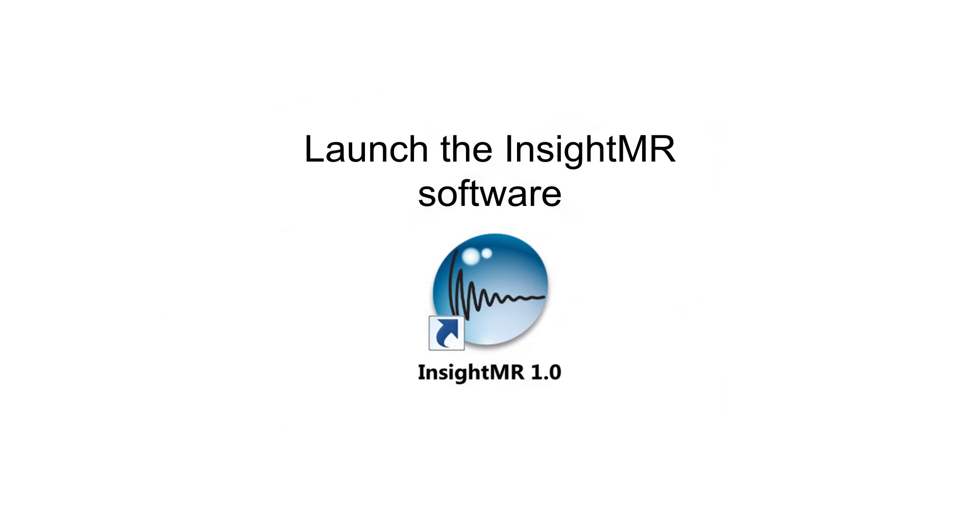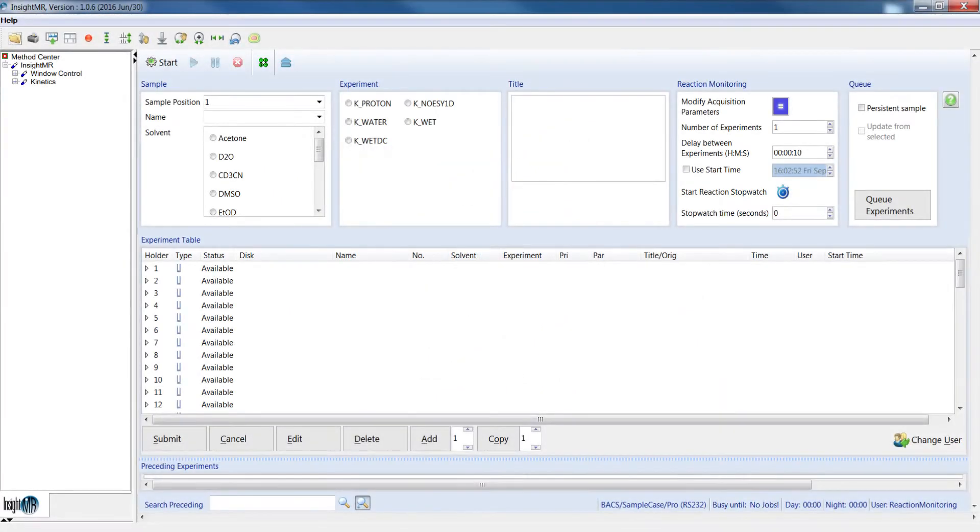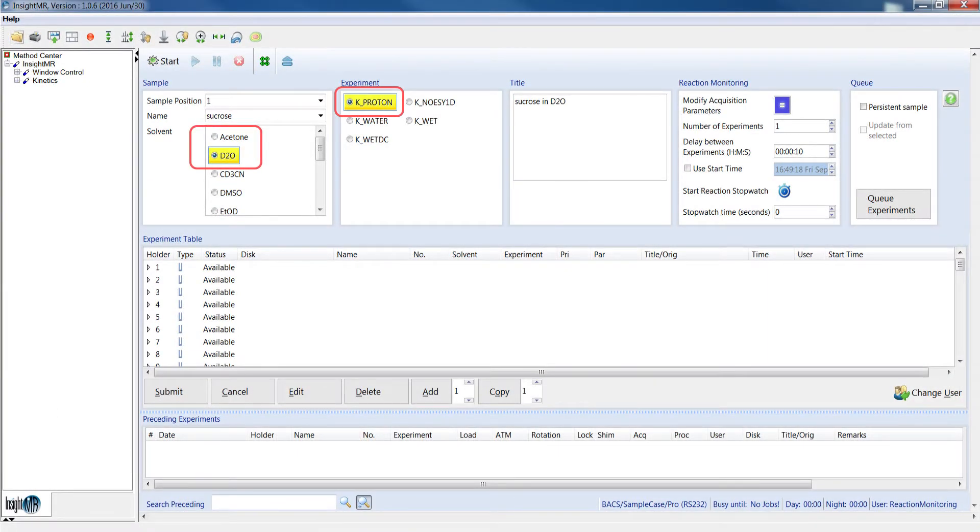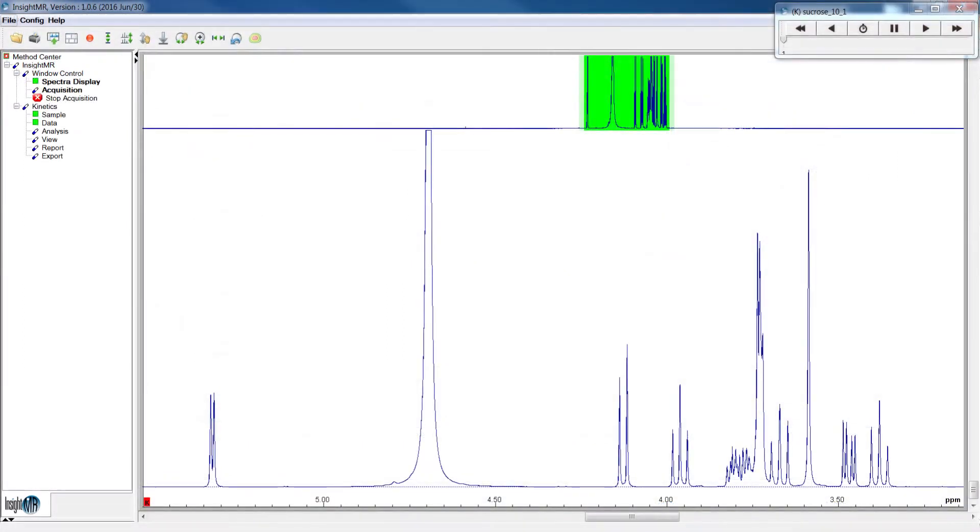Then launch the Insight MR software and acquire a Proton MR spectrum with any known 5mm sample in a deuterated solvent, simply to ensure that the spectrometer is locked and is working properly.